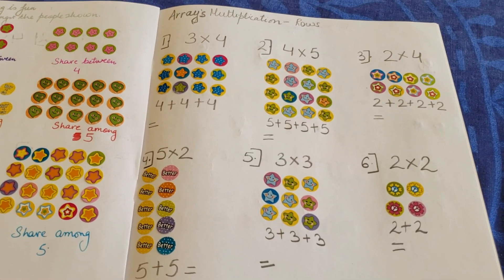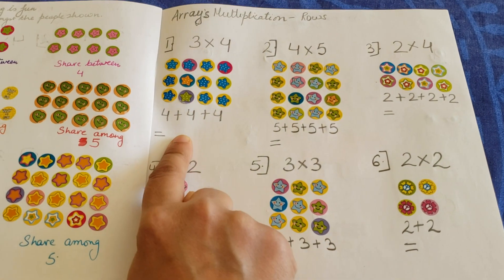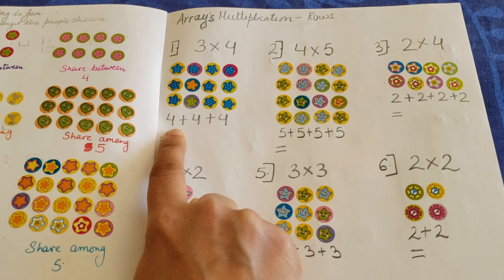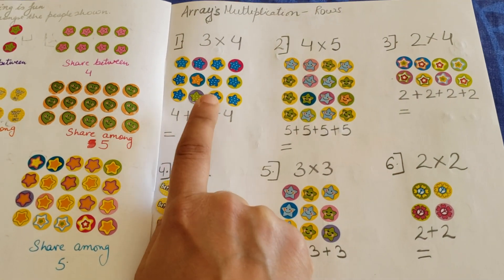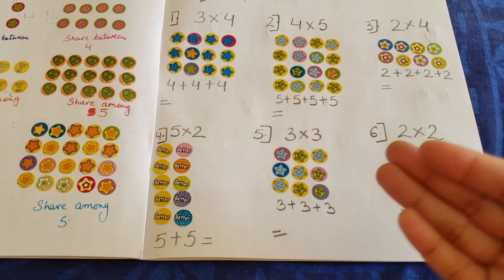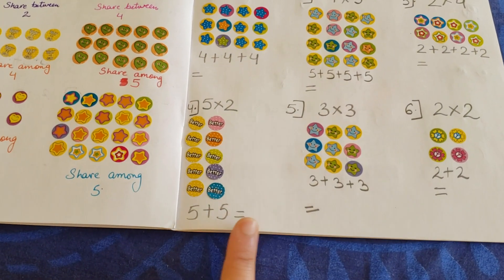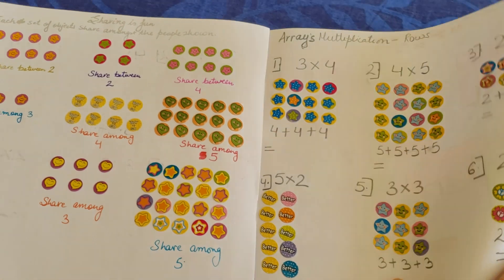Then you have multiplication rows. Here you have three into four. What Vivan needs to do is I've also written in this form where four plus four plus four, and then he needs to find the answer. Four into five, two into four, two into two, three into three, five into two. He needs to figure it out and write the answer correspondingly.